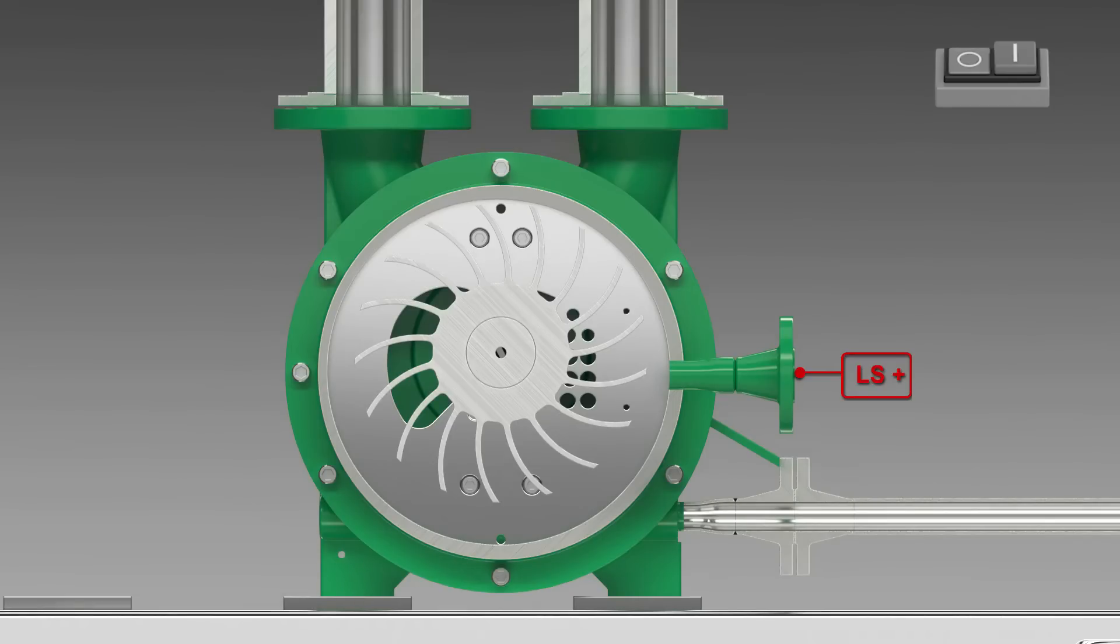The liquid ring vacuum pump is filled with operating liquid using the connector on the end shield. When the operating liquid has reached the prescribed level, the pump is activated by a level switch.